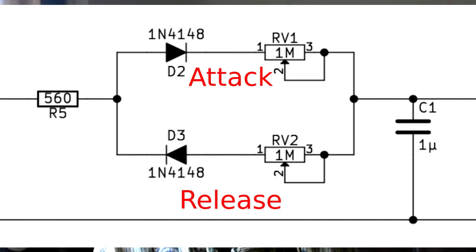To ensure that the release potentiometer only affects the release phase, then the diode is pointing in the opposite direction because we want it to discharge.